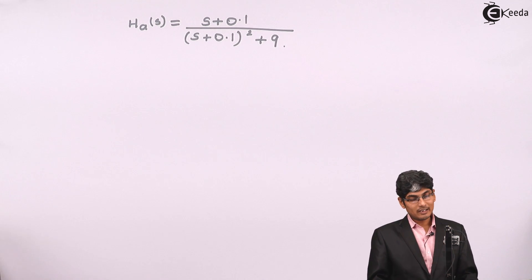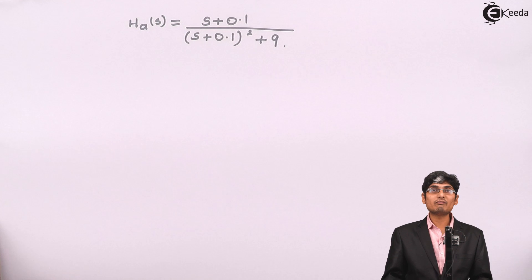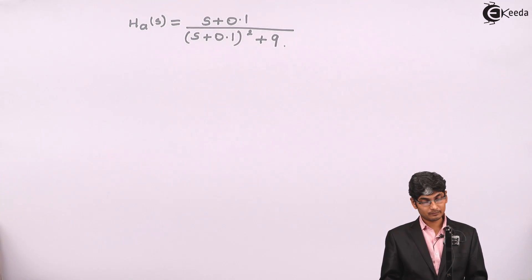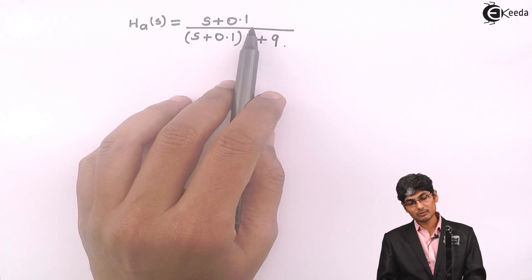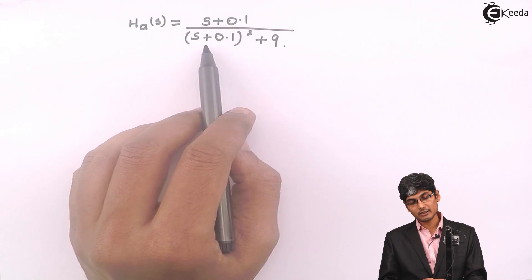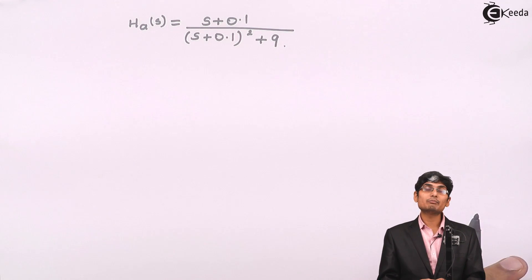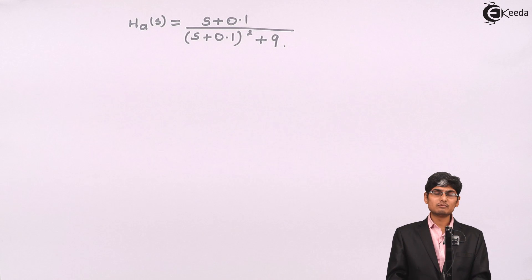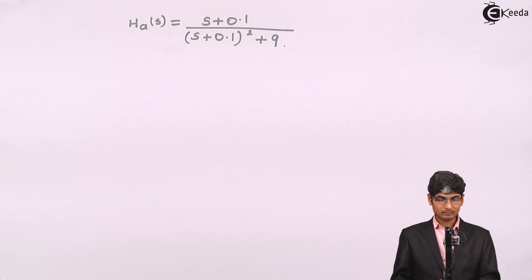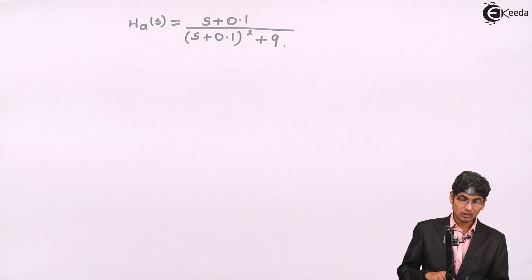Hi friends, let us today understand how to apply the impulse invariance method on a given problem. The problem for today is given as HA of S equals S plus 0.1 divided by (S plus 0.1) squared plus 9. Here they have not mentioned anything about the sampling period, so we will keep the sampling period as T. Let us go ahead and solve this problem.